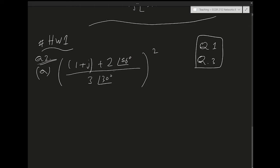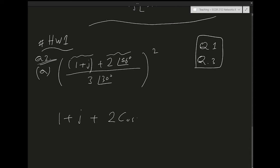In this problem, one plus j needs to be added to 2∠56°. You have one number in rectangular representation and another in polar representation, and we cannot add them together easily unless we transform the numbers. The easiest thing is to keep one plus j and transform 2∠56° to rectangular form.